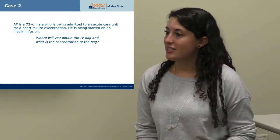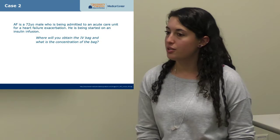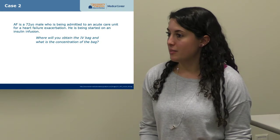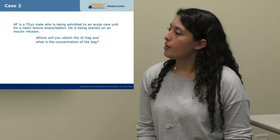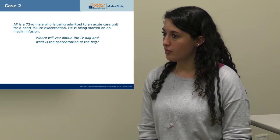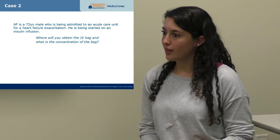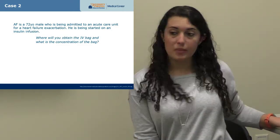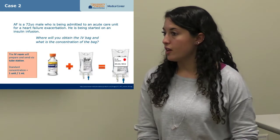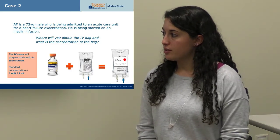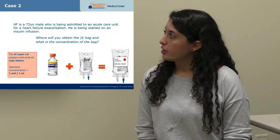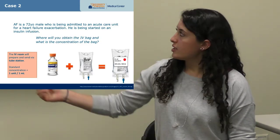Moving to case two: A.F. is a 72-year-old male admitted for heart failure exacerbation who needs an insulin infusion started while waiting. The insulin infusion is not kept in the Pyxis — it's made in the IV room once the order is placed. Our standard concentration is 100 units per 100 mL, a one-to-one ratio, so the rate in units per hour equals the rate in mL per hour. These are always made with regular insulin in a normal saline bag and arrive with a red sticker for easy identification.